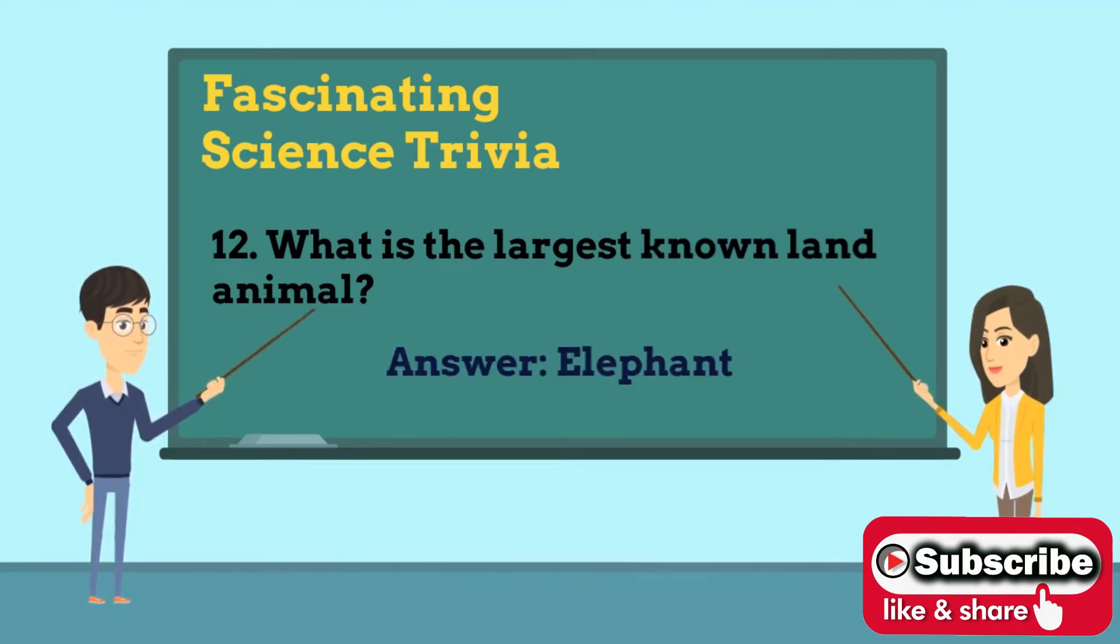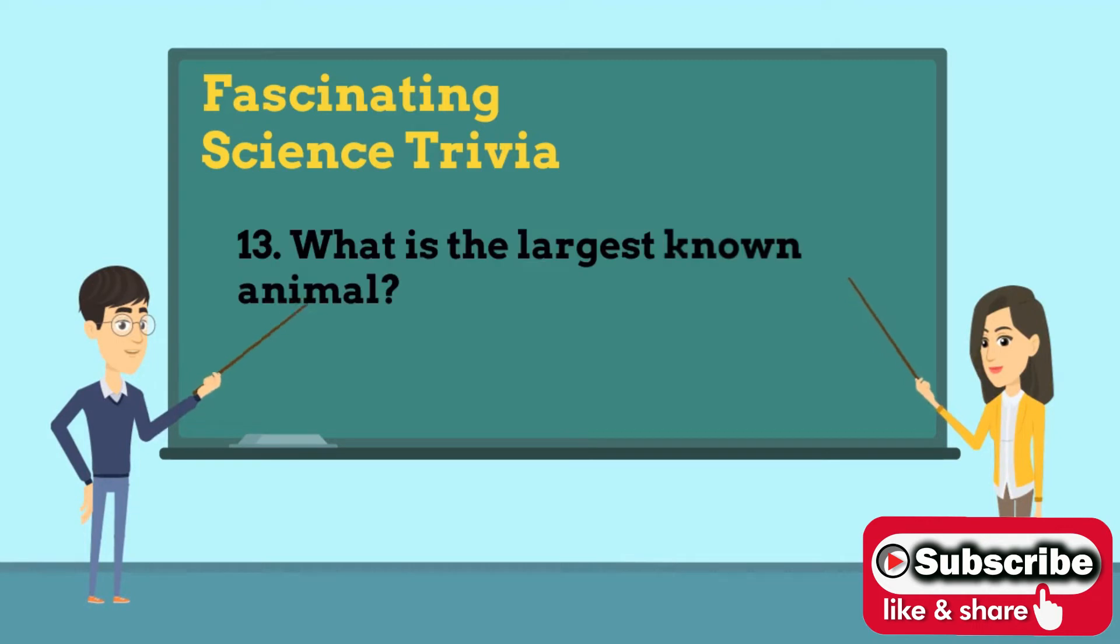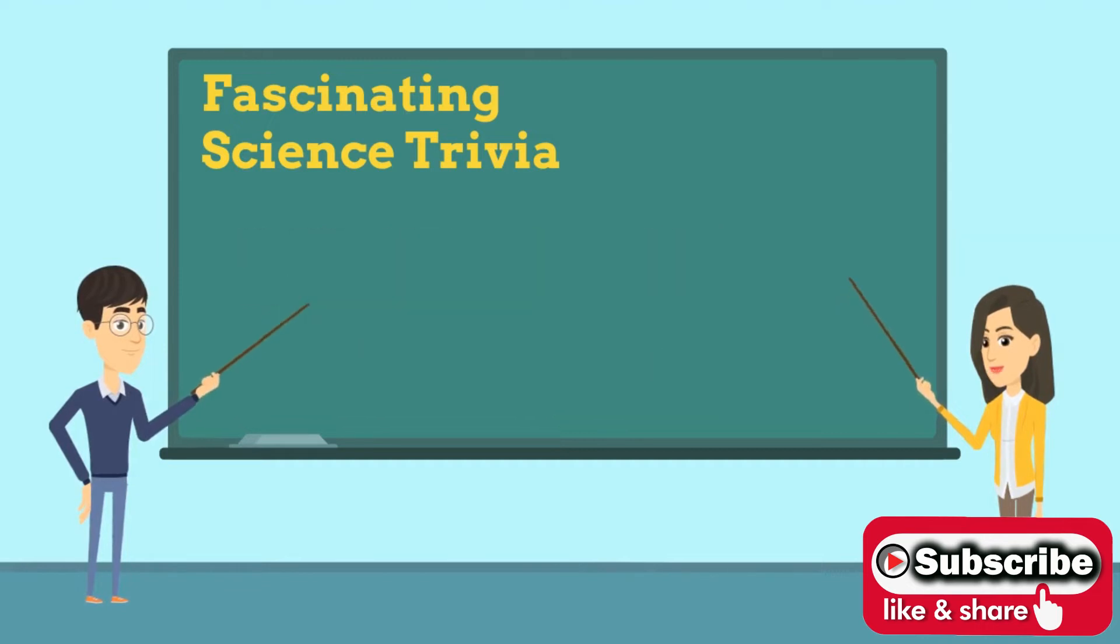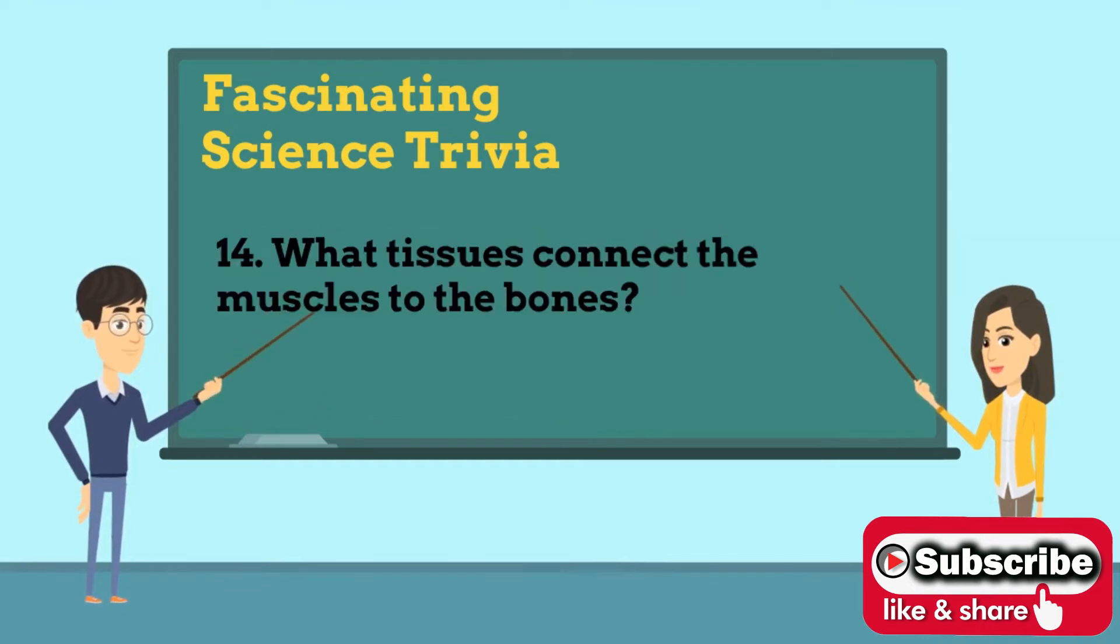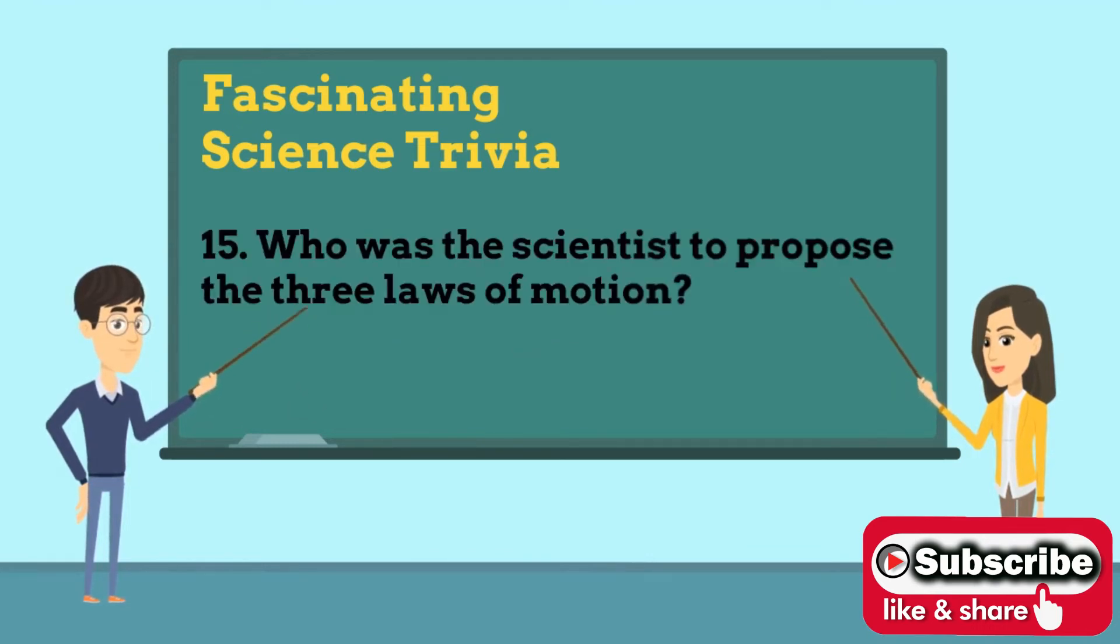known land animal? Answer is elephant. Number 13: What is the largest known animal? Answer is blue whale. Number 14: What tissues connect the muscles to the bones? Answer is tendons. Number 15: Who is the scientist to propose the